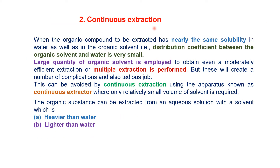The second type is continuous extraction. This is used when the organic compound to be extracted has nearly the same solubility in water as in the organic solvent, meaning the distribution coefficient Kd between the organic and aqueous phase is very small. Using a large quantity of organic solvent or multiple extractions can achieve good extraction efficiency, but these create complications and are tedious.